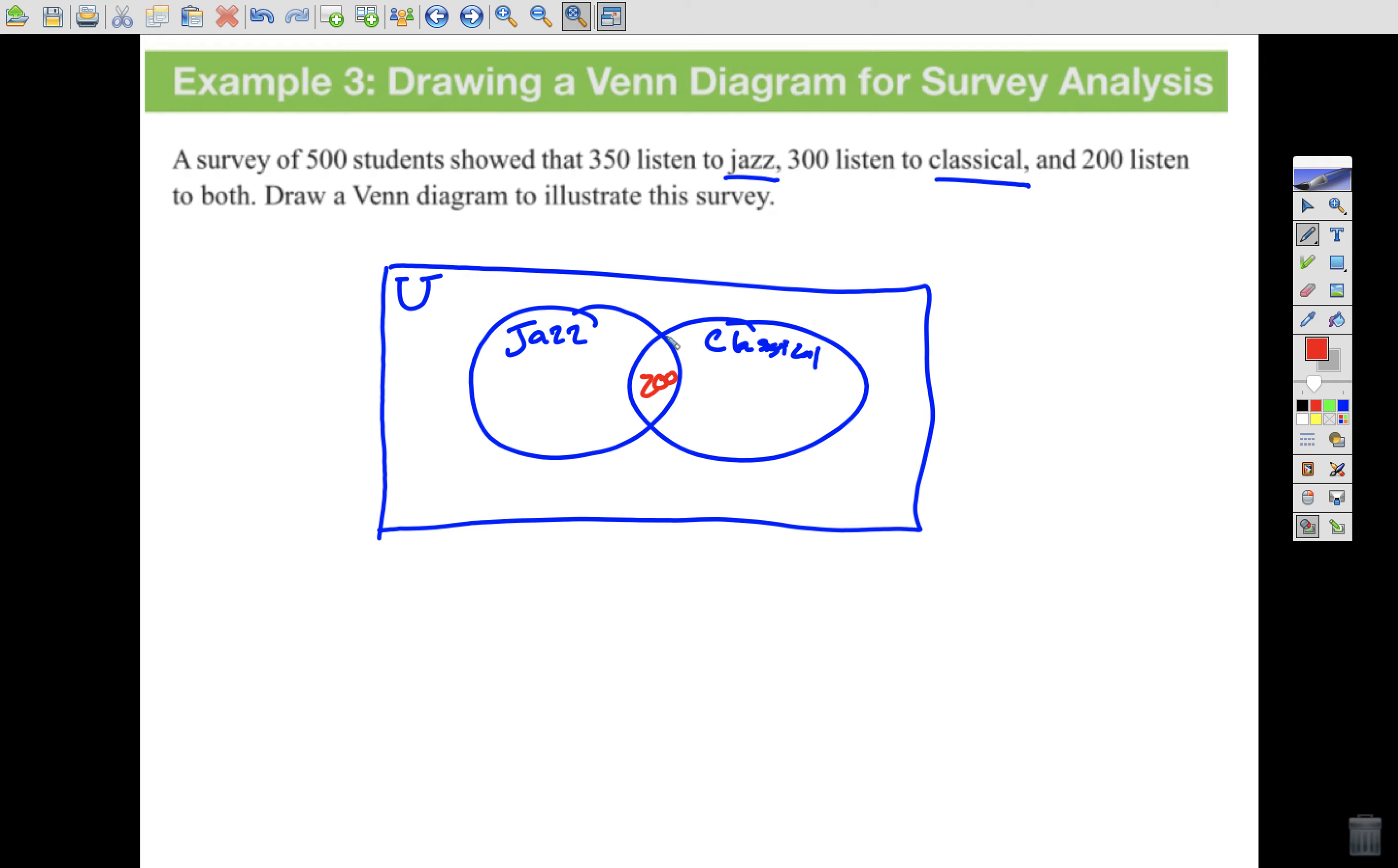Well, that would be the people that listen to both. How many listen to both? 200. So I'm going to put 200 in the very middle. It says 350 listen to jazz, but I've already used 200. So I'm going to take the 350 that listen to jazz and subtract the 200 that listen to both, and say 150 only listen to jazz. 200 of my jazz listeners also listen to classical. I had 300 that listen to classical, but I've already used 200. 200 of them listen to jazz also. So I'm going to subtract, and 100 only listen to classical.